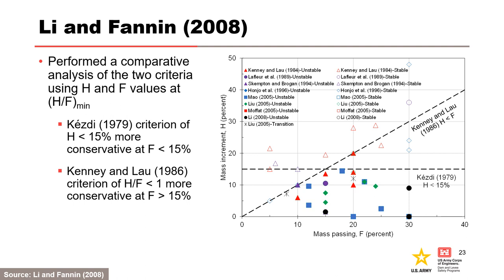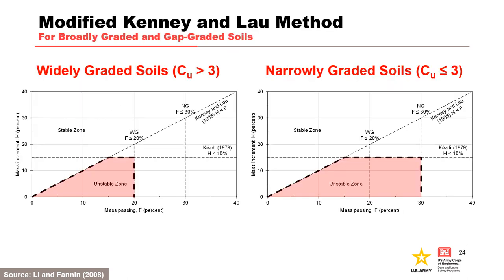Leon Fannin (2008) indicated that application of the Kezdy and Kenny and Lau methods to the literature database has mixed success in assessing susceptibility to internal instability for gap graded and widely graded soils. Their comparison indicates the D15/D85 filter ratio of the Kezdy method is relatively more conservative for mass passing F less than 15%, and the minimum stability index of the Kenny and Lau method is more conservative for F greater than 15%. These observations led them to combine aspects of the two methods, where the Kenny and Lau method applies for F less than 15% and the Kezdy method applies for F greater than 15%.